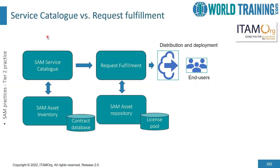We are showing here the service catalog versus request fulfillment. We have the service catalog for SAM, which indicates what software services are available. Those are reflected in the SAM asset inventory for the software assets in scope, and they are connected with the contract database. The ones which are enabled for use and reuse will be in the SAM asset repository. Therefore, the request fulfillment process for the users will have to work with the enabled SAM asset repository.